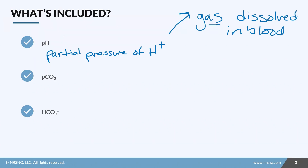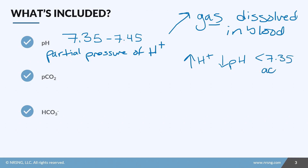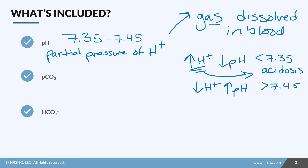The normal pH value is 7.35 to 7.45. A high hydrogen concentration corresponds to a lower pH, so anything less than 7.35 is considered acidosis — excess hydrogen equals acidosis. A low hydrogen level means a high pH, so anything greater than 7.45 is considered alkalosis.